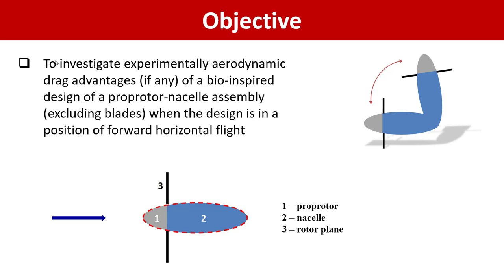There could be different designs. So in our study we investigate not the entire assembly but proprotors without blades incorporated in the nacelle, and this combined body is located to resemble its position in forward horizontal flight. On the slide it's shown by a red dashed line of the body we are interested in, and it includes areas 1 and 2.